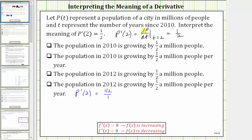The 1/2 represents the change in the population, which is measured in millions of people. So the 1/2 represents 1/2 a million people. The denominator of 1 represents the change in time, and time is measured in years. So this would be 1 year.